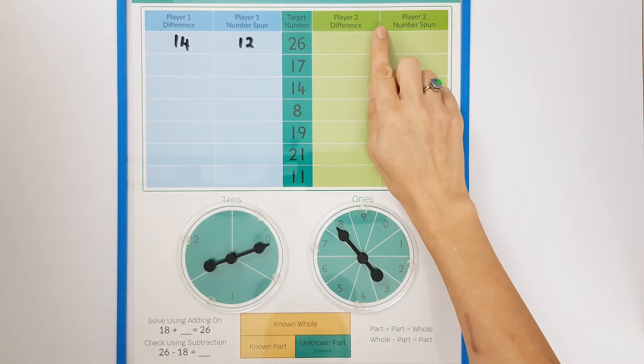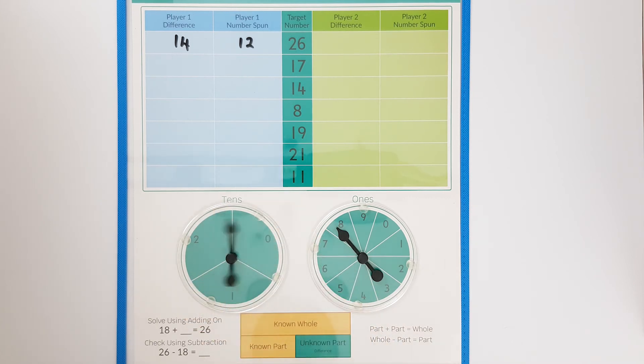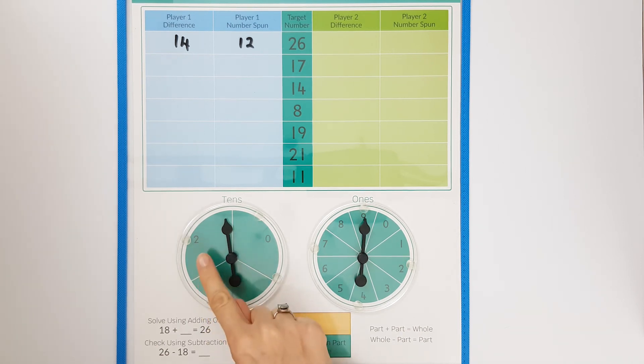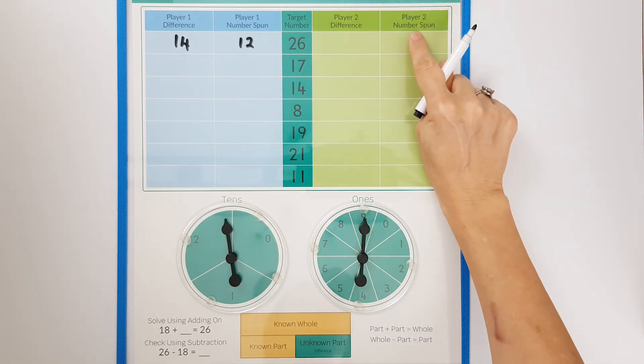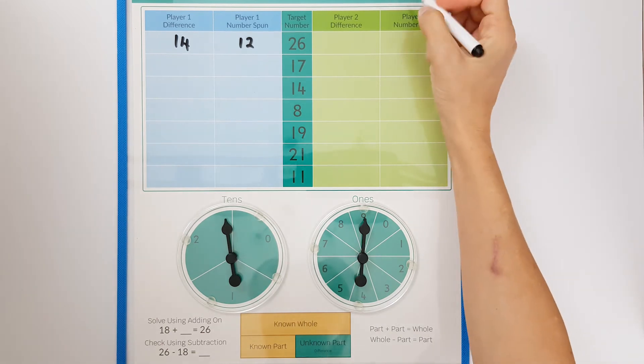Player two has their turn. They spin two tens and nine ones. They say twenty add nine equals twenty nine and they record the number spun in this column.